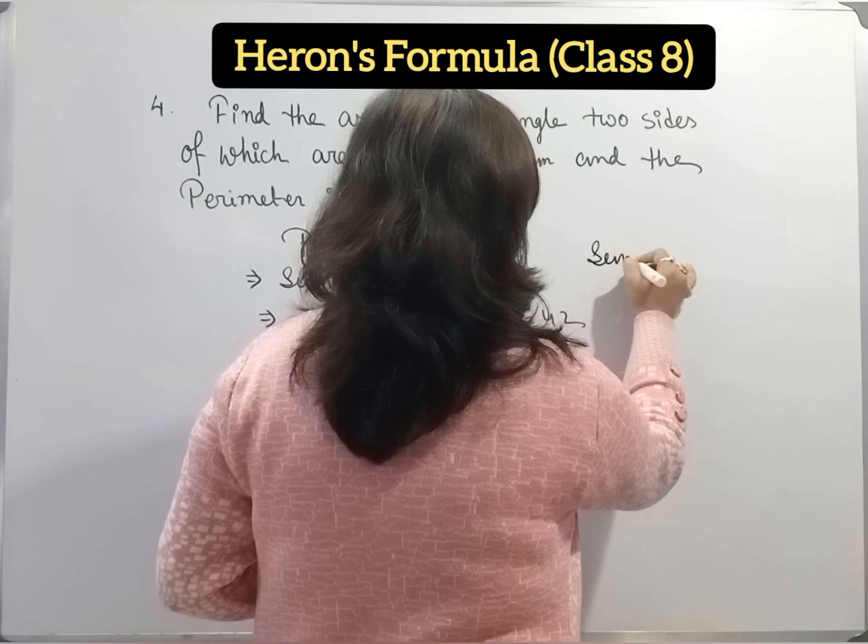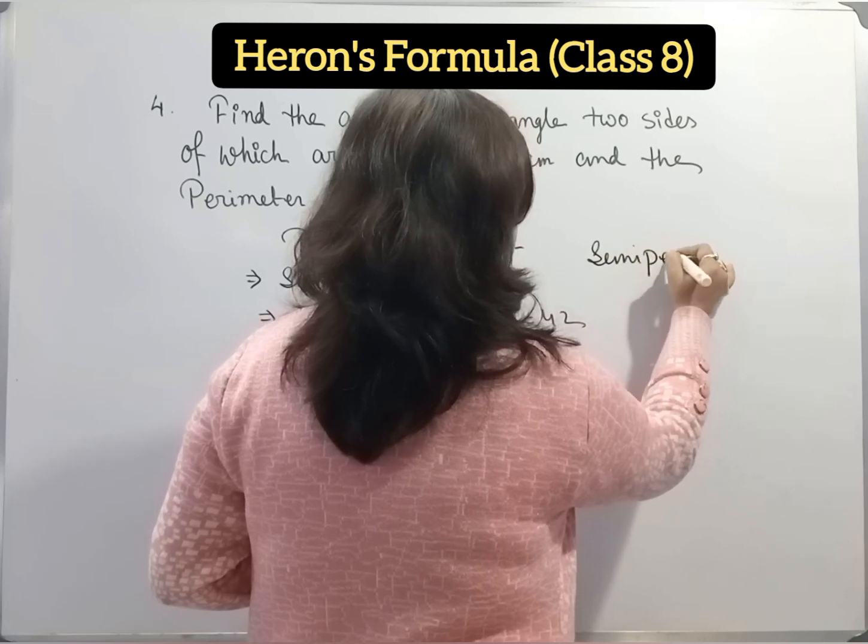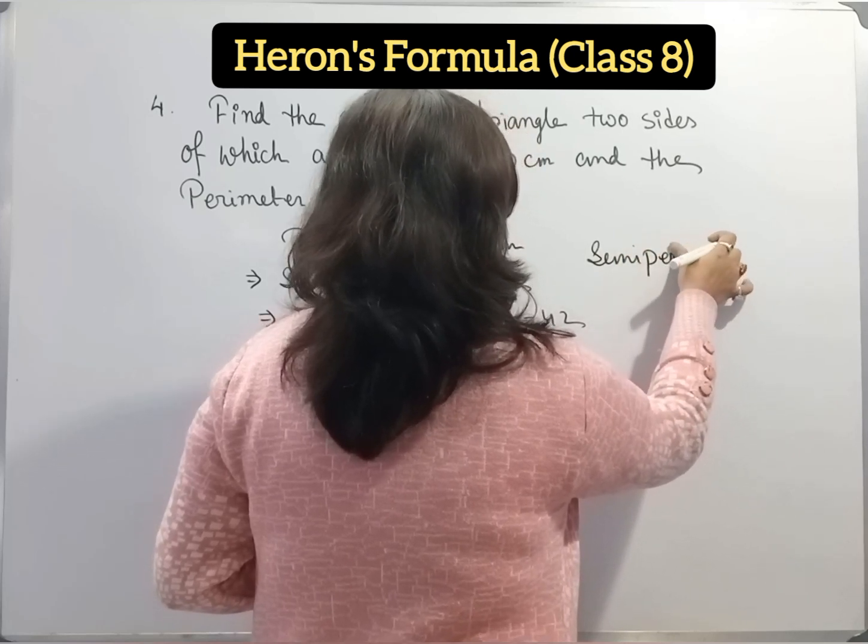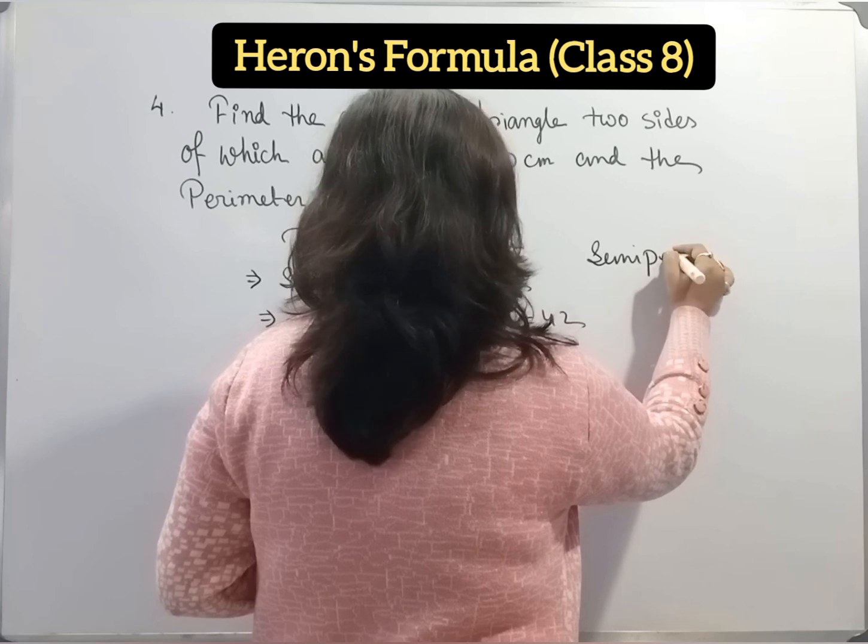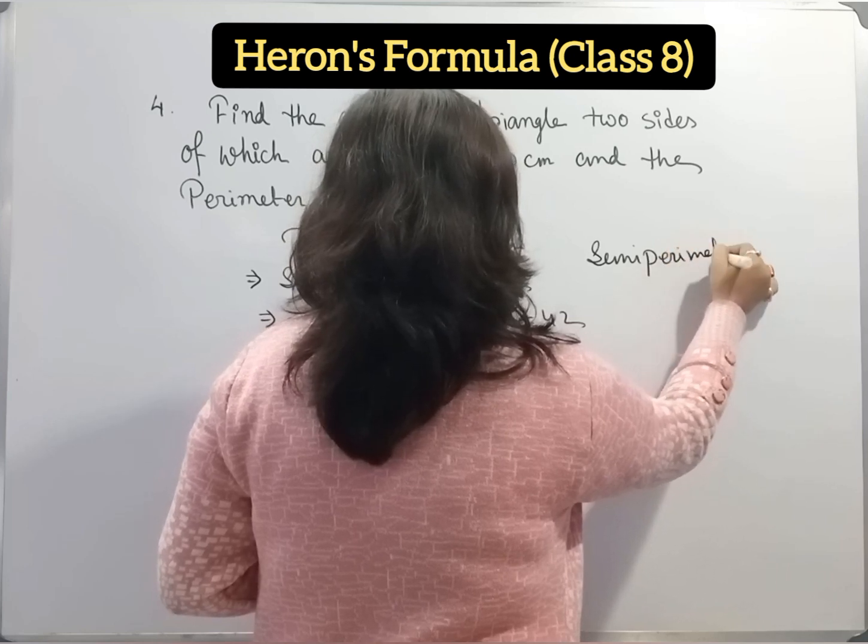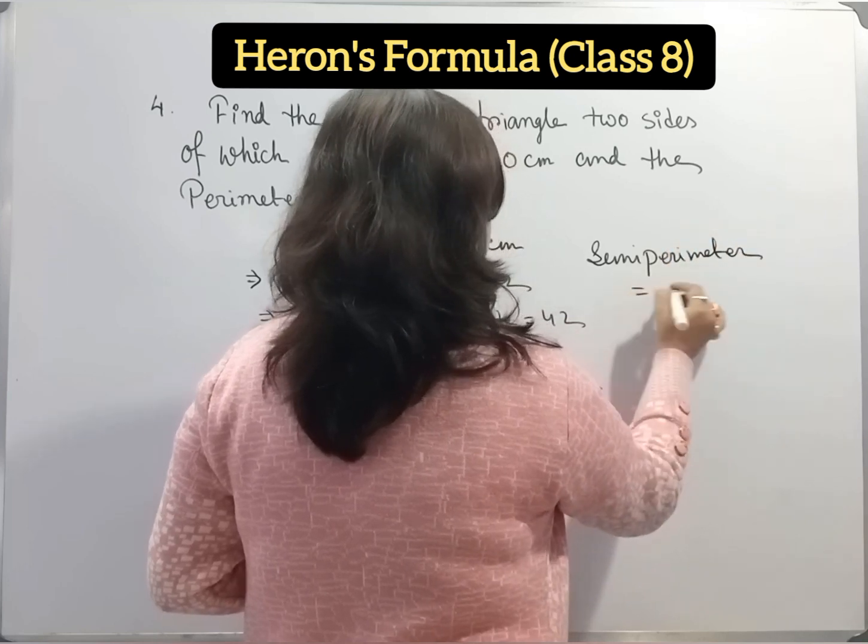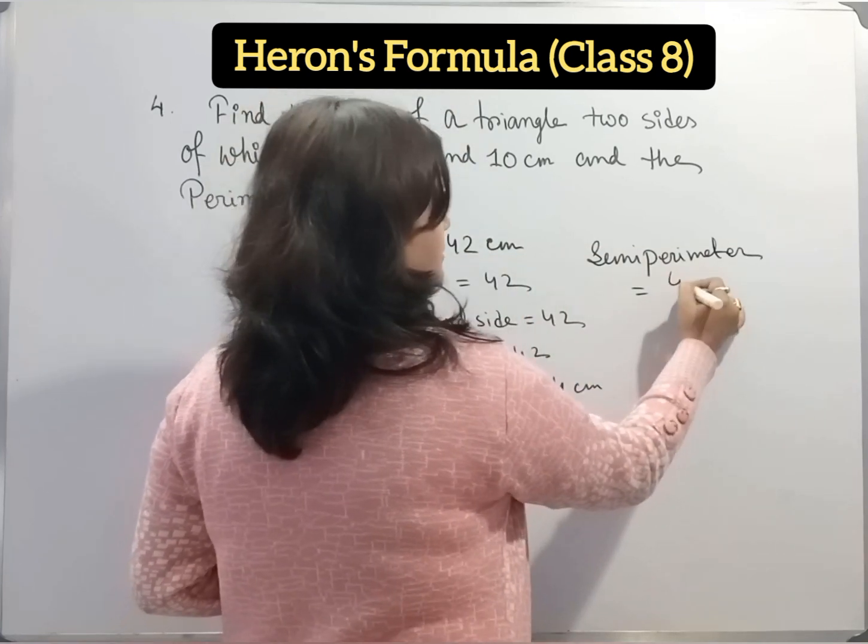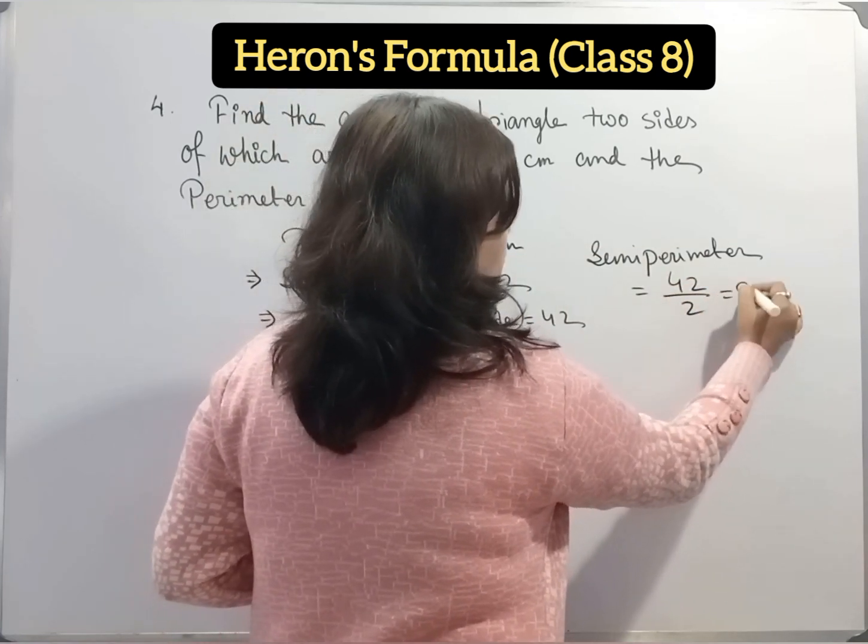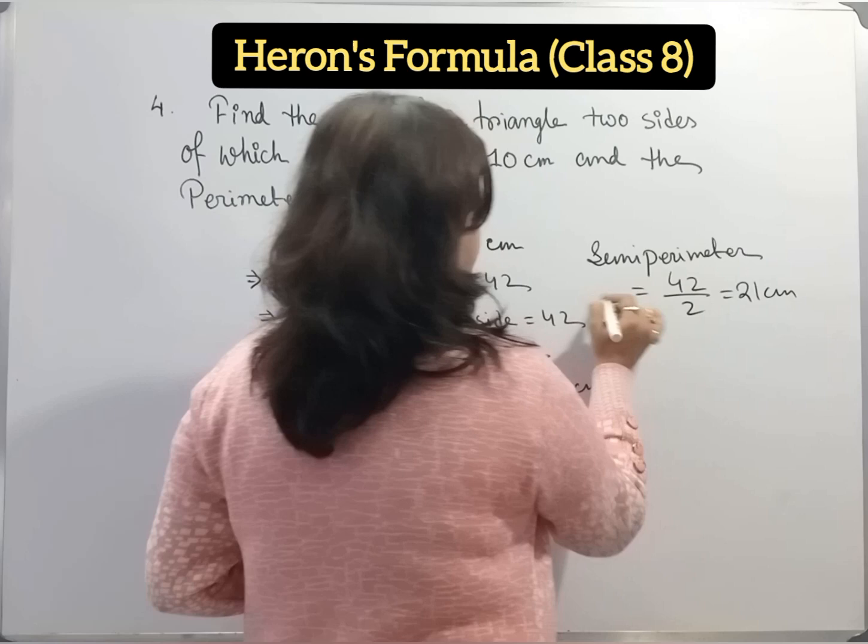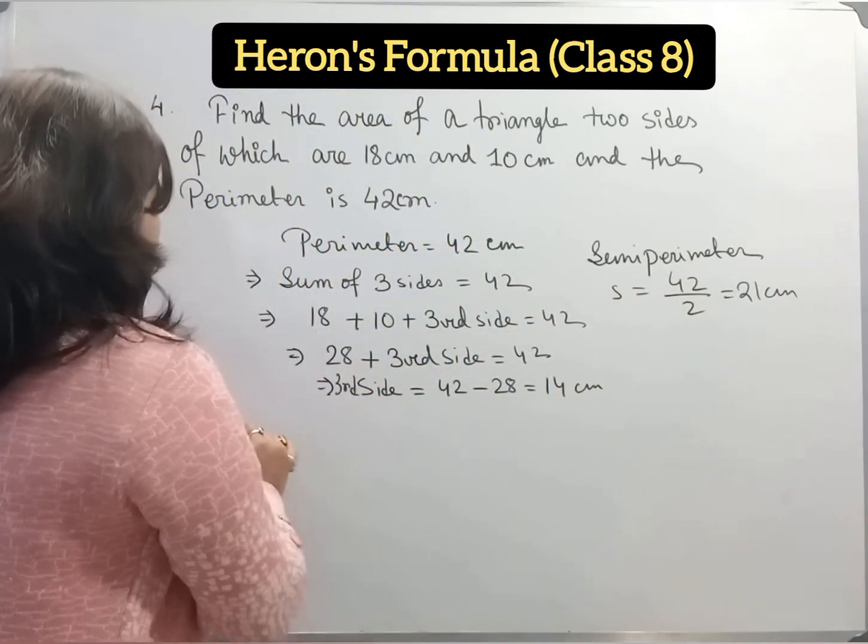Now perimeter is 42 centimeter. So semi-perimeter, 42 by 2, which equal to 21 centimeter. So S equal to 21 centimeter.